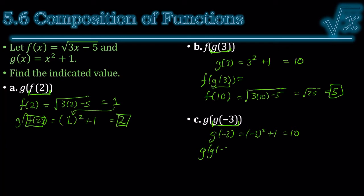Now, g of g of negative 3 would be the same thing as g of 10, because g of negative 3 is 10. Plug in the 10. You get 101.